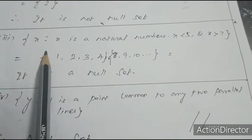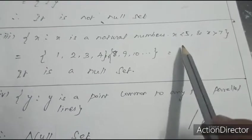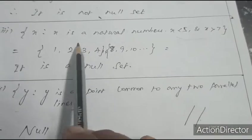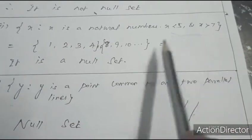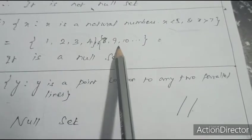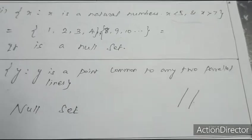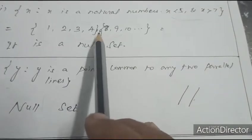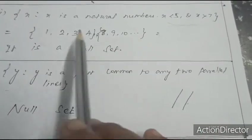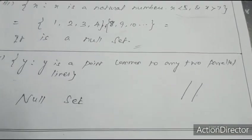Third question: {x : x is a natural number, x < 5 and x > 7}. The two conditions must be satisfied simultaneously. x < 5 means {1, 2, 3, 4} and x > 7 means {8, 9, 10, ...}. There are no common elements in the two sets. Therefore it is a null set.